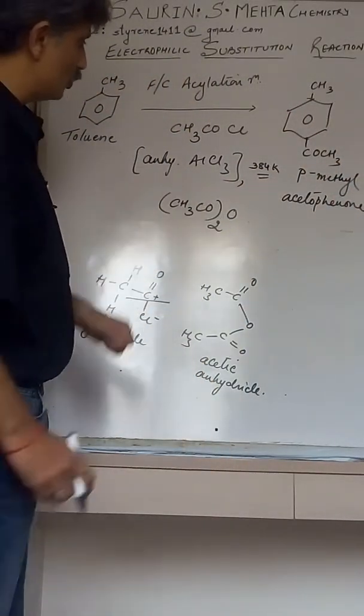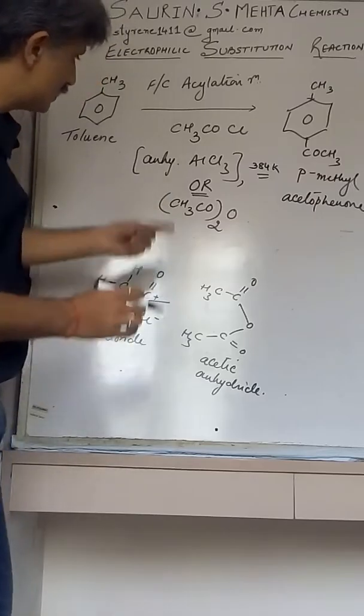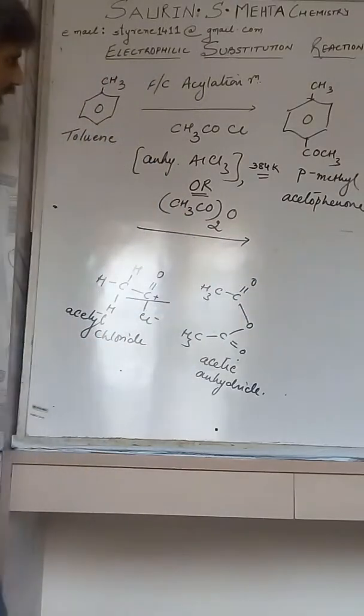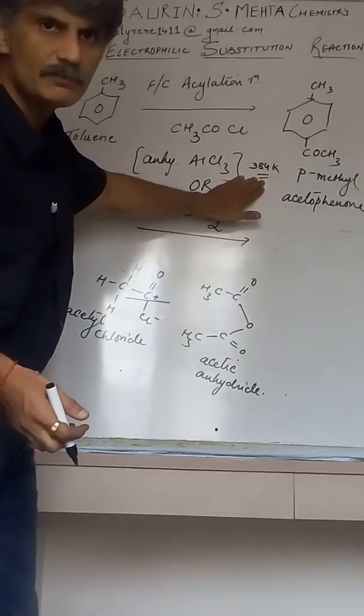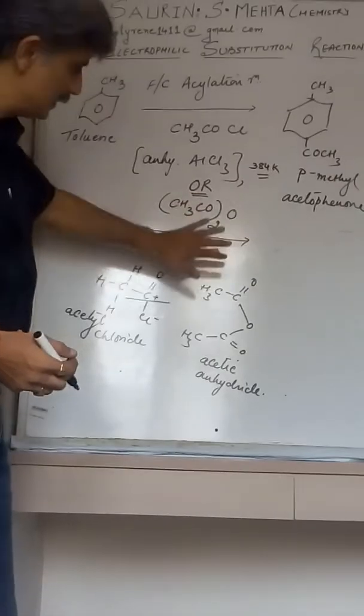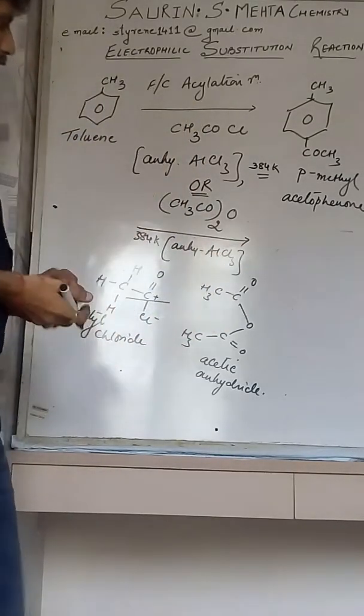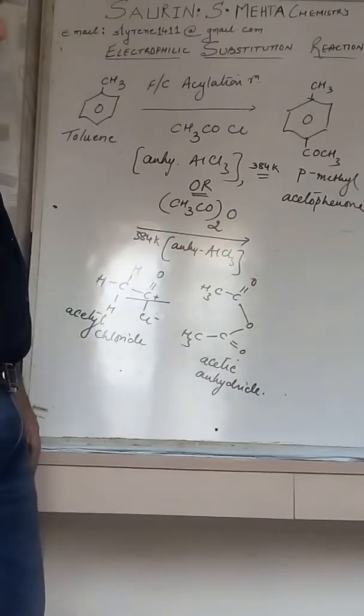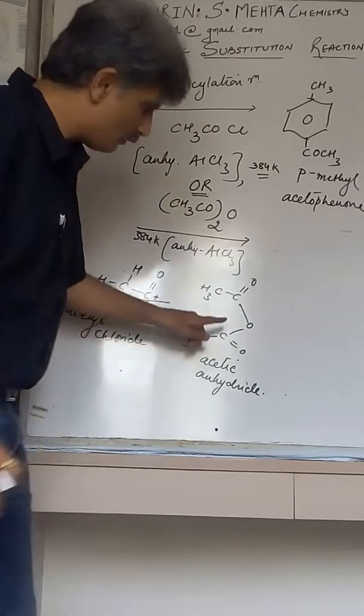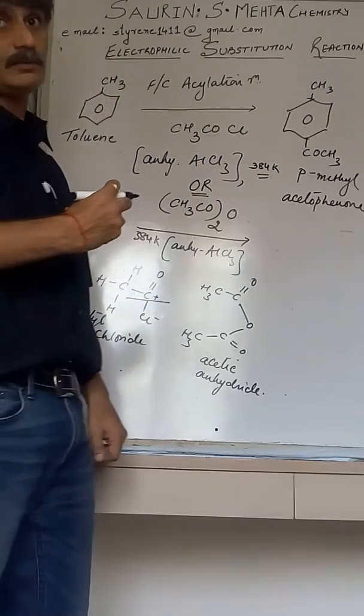We come back to COCH3-CO-O-CO-CH3. I will write OR, you can take COCH3COCl or this. This is your acetic anhydride. When the reaction is carried out with acetic anhydride in the same conditions, same temperature 384 Kelvin and same catalyst anhydrous AlCl3, the only change will be in the byproduct.